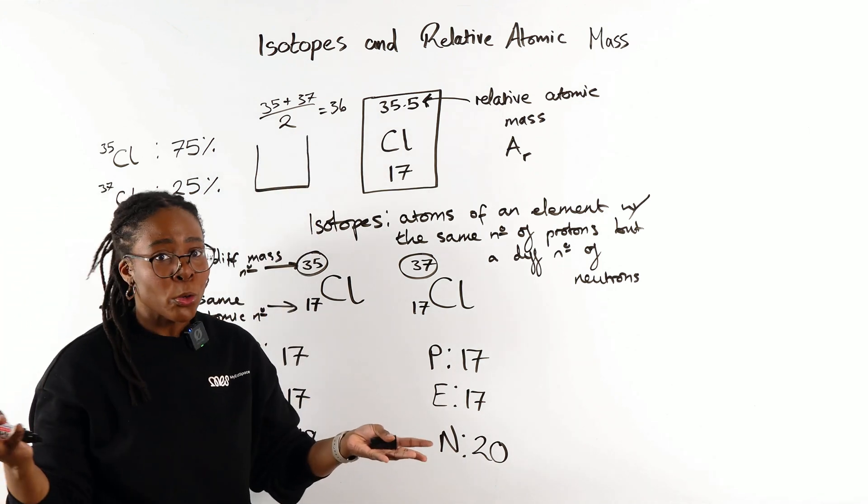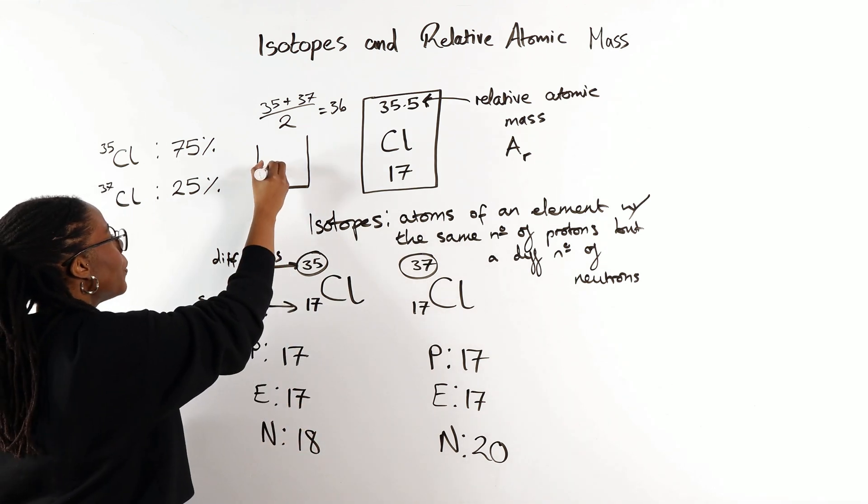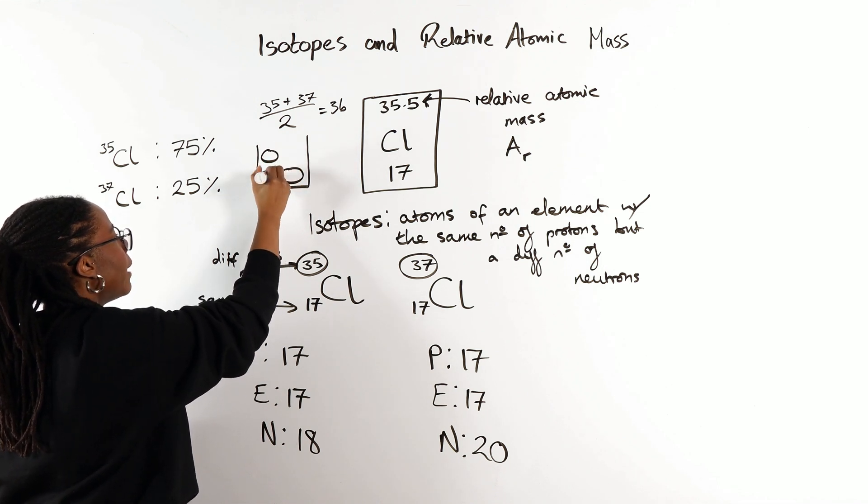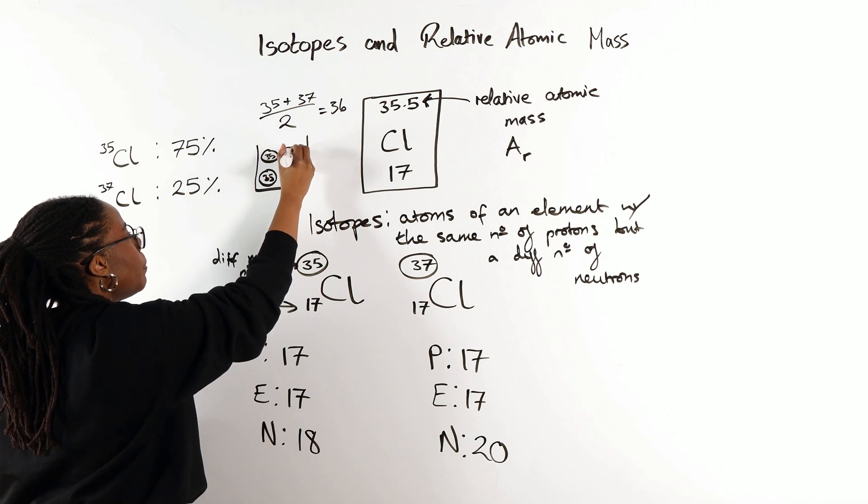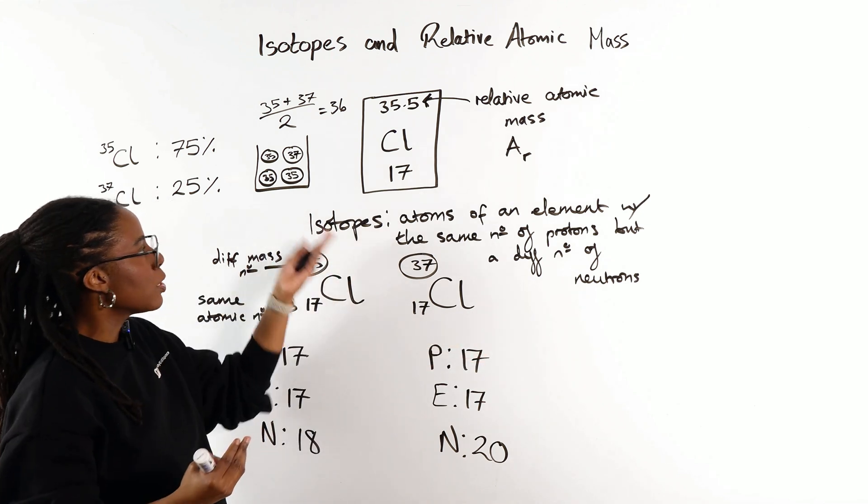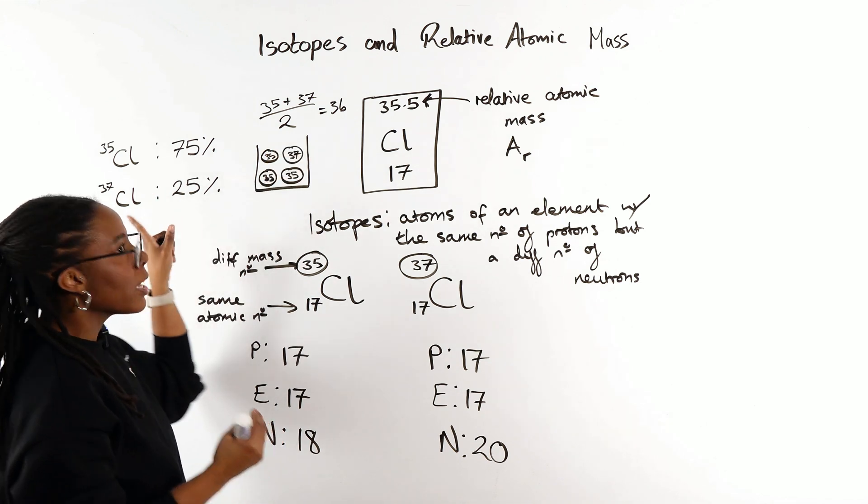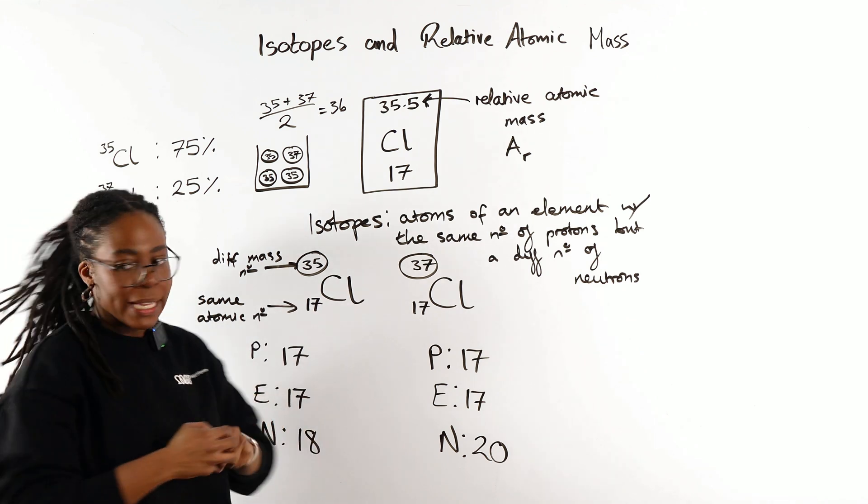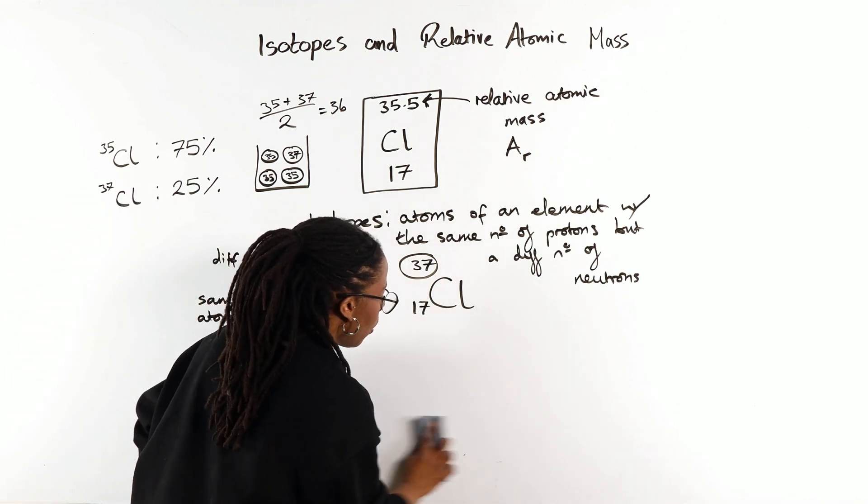If we had a pot full of chlorine atoms, let's say we had four chlorine atoms in a beaker or in a pot. Three of them would be chlorine-35. And one of them would be chlorine-37. 75%, 25%, three quarters, one quarter. So now when we're calculating the relative atomic mass, we don't just think about which two isotopes we have, we think about the abundance in which they exist.